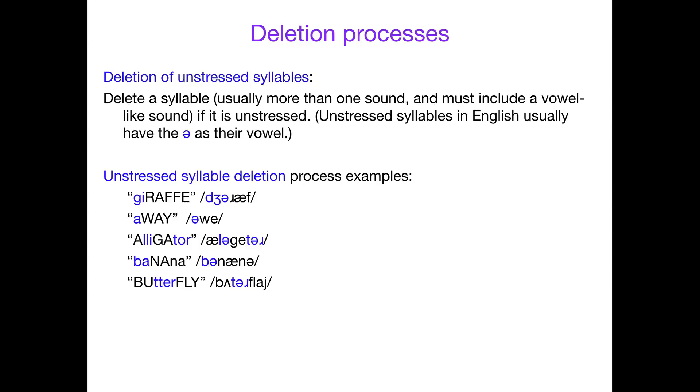And then unstressed syllables. What this is: you have a syllable where the heart of a syllable is one of these vowel-like sounds, and an unstressed syllable is one that just doesn't get a lot of emphasis. If you're speaking really quickly or you're having trouble speaking, as you might if you're a child, you kind of drop out the ones that don't have a lot of emphasis on them. Unstressed syllables in English usually have this schwa as their vowel.